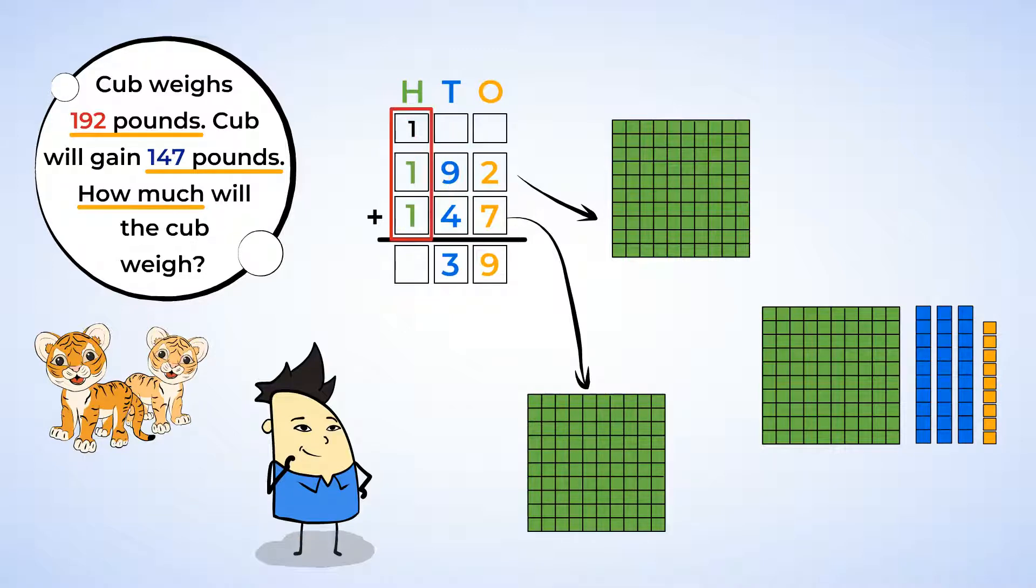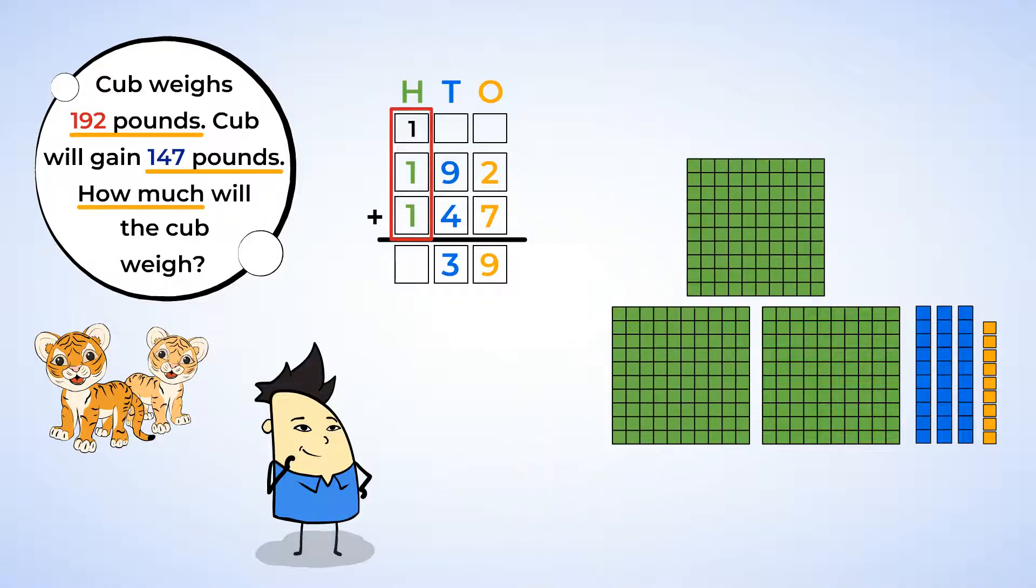Finally, count up the hundred plates. There are three hundred plates. One from the first number, one from the second number, and one from the tens we regrouped. So, we have a three in the hundreds place. One hundred ninety-two plus one hundred forty-seven equals three hundred thirty-nine. So, the tiger cub will be three hundred thirty-nine pounds. Great work!